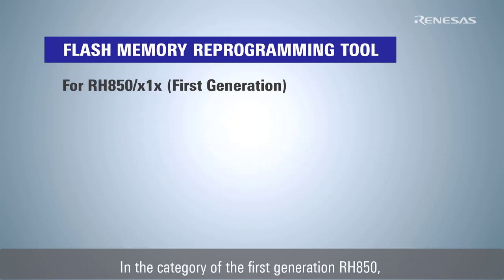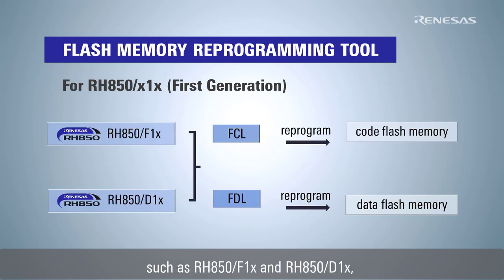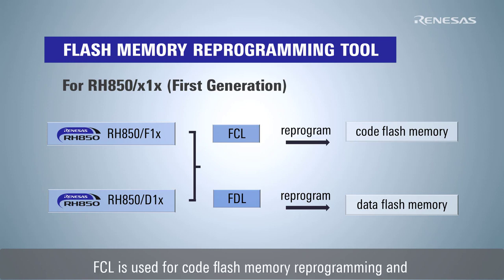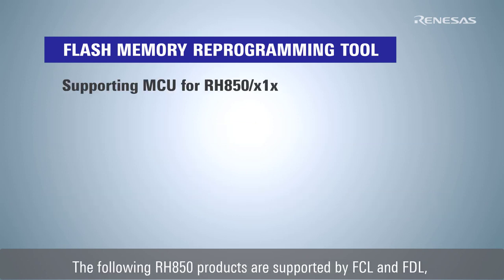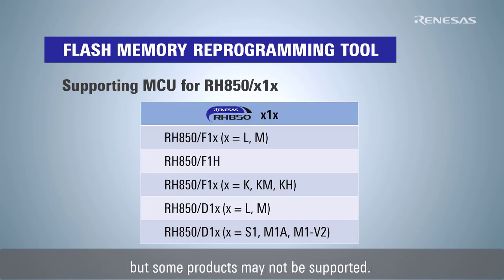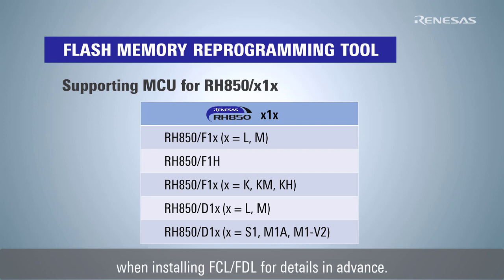In the category of the first generation RH850, such as RH850F1X and RH850D1X, FCL is used for code flash memory reprogramming and FDL for data flash reprogramming. The following RH850 products are supported by FCL and FDL, but some products may not be supported. Please refer to the document support dot text when installing FCL and FDL for details in advance.